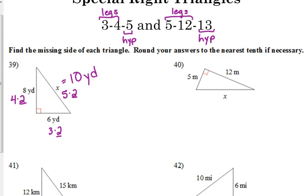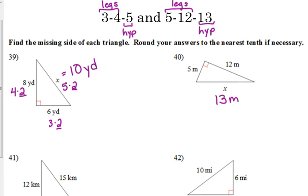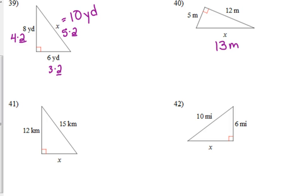Number 40 has a leg of 5 and a leg of 12, so we know that the hypotenuse is 13 — in this case, meters. Number 41 has a leg of 12 and a hypotenuse of 15. Be careful: just because you see 12 does not automatically mean it's 5, 12, 13. This one does not have a hypotenuse of 13 — it must be a multiple of the 3, 4, 5. So 12 is 4 times 3 and 15 is 5 times 3, meaning the other leg is 3 times 3 — so this leg is 9 kilometers.